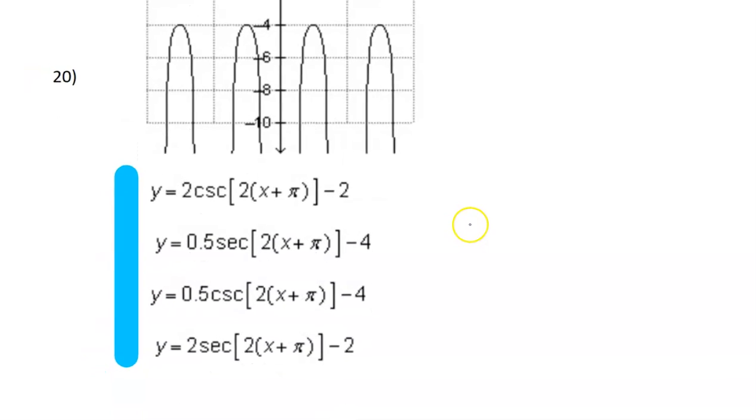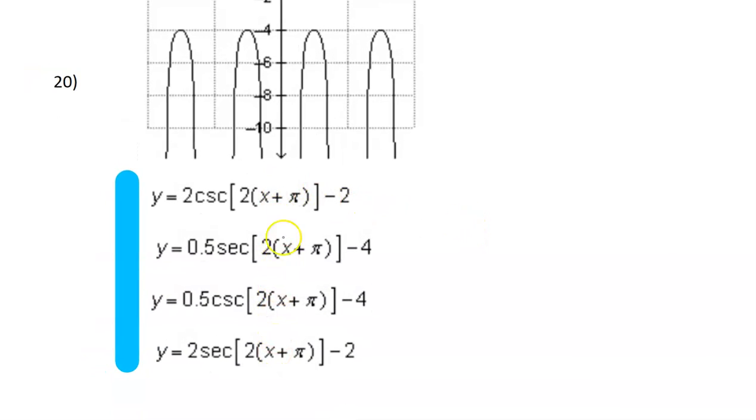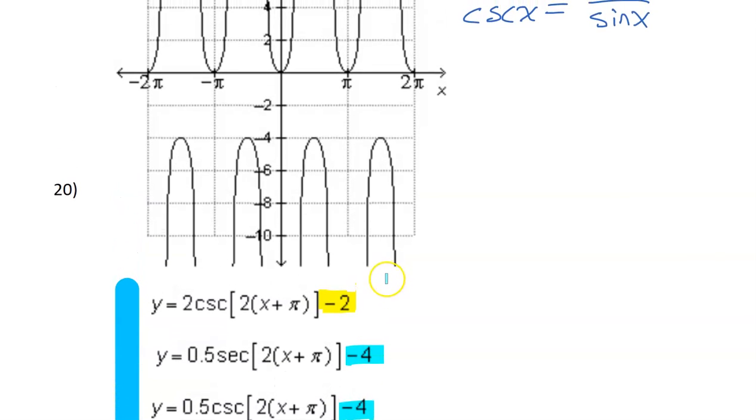Alright, so let's see if we can use the process of elimination to weed out a couple of these. I'm noticing that some of the equations have a midline of negative 2. This number on the end is going to tell you the midline. These two have a midline of negative 2, while these two have a midline of negative 4. That should be easy to identify.